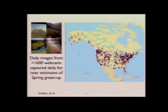To give a simple example: we've been collecting daily images from about 1,600 freely available, pre-existing internet-connected webcams distributed across the continental US. These are cameras owned by USGS, the Park Service, or Highway Services, pointing to patches of vegetation.